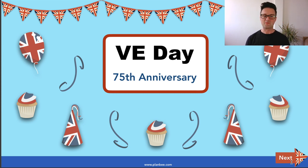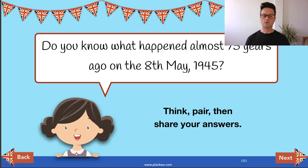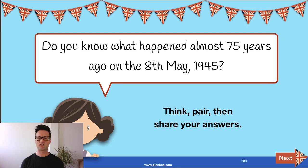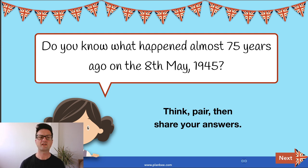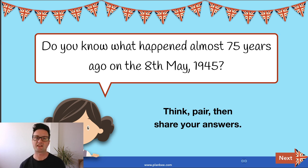VE Day — the 75th anniversary. Do you know what happened almost 75 years ago on the 8th of May 1945? We've said VE Day was happening, but what was VE Day? What else had happened at around that time? What's important historically that occurred in 1945? World War II had ended — that's right. The Second World War took place between 1939 and 1945.